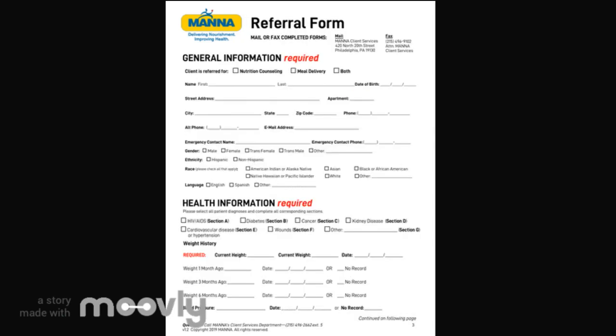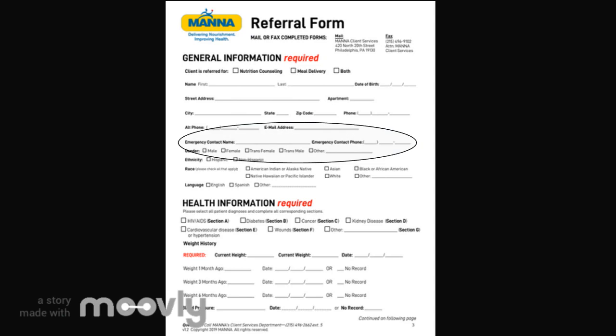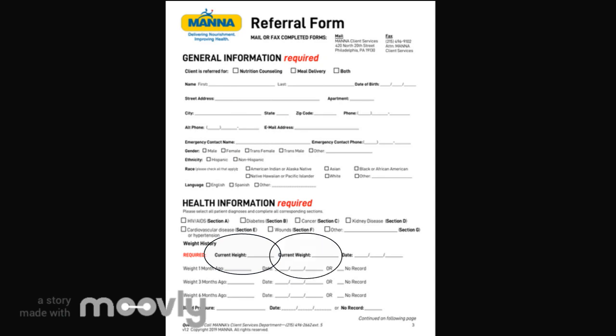We cannot set clients up for meal delivery without both an address and a phone number. An emergency contact and number are also very helpful. We also require a current height and weight to set up the client. A weight history with dates is very helpful for determining eligibility.